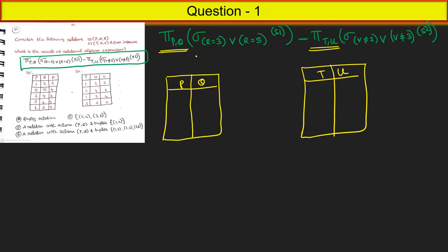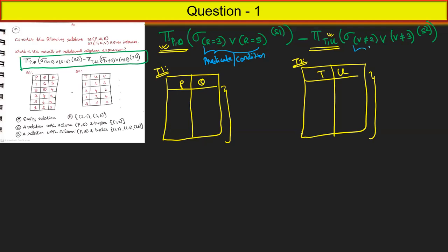If you have a particular table — let's say T1 and T2 — you can apply a predicate or condition to the table. This is called a predicate or condition. Now, in this particular table S1, I am going to apply this condition, and the condition is satisfied for everyone — it will go to T1. Similarly for S2, I apply the condition, and whoever satisfies it goes to T2.